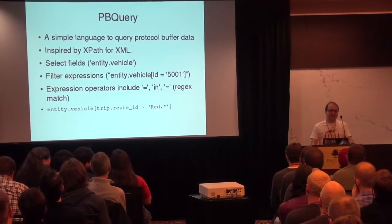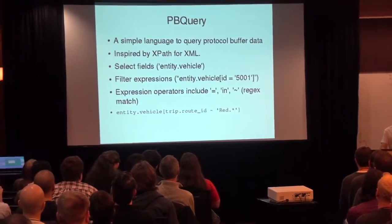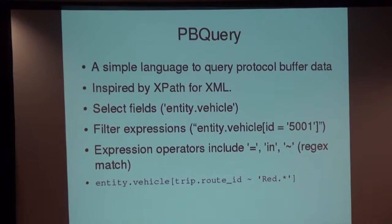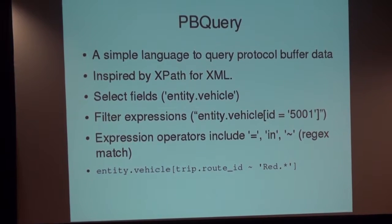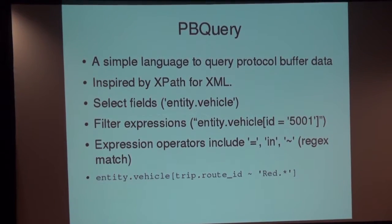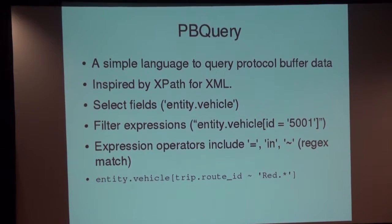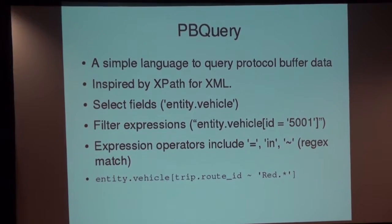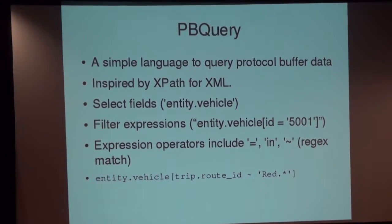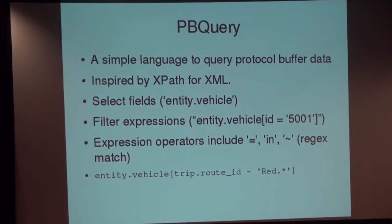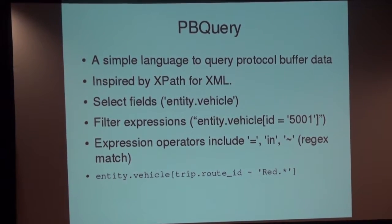The way to do that is to build a little query language that lets me find out, for example, where is bus 5001? Protocol buffers, in case you don't know, are a binary format. The data model is kind of like JSON — it has structures, arrays, fields, and messages. There are other similar formats with other similar query languages. XPath was kind of an inspiration. And there's a basic example of what it looks like.